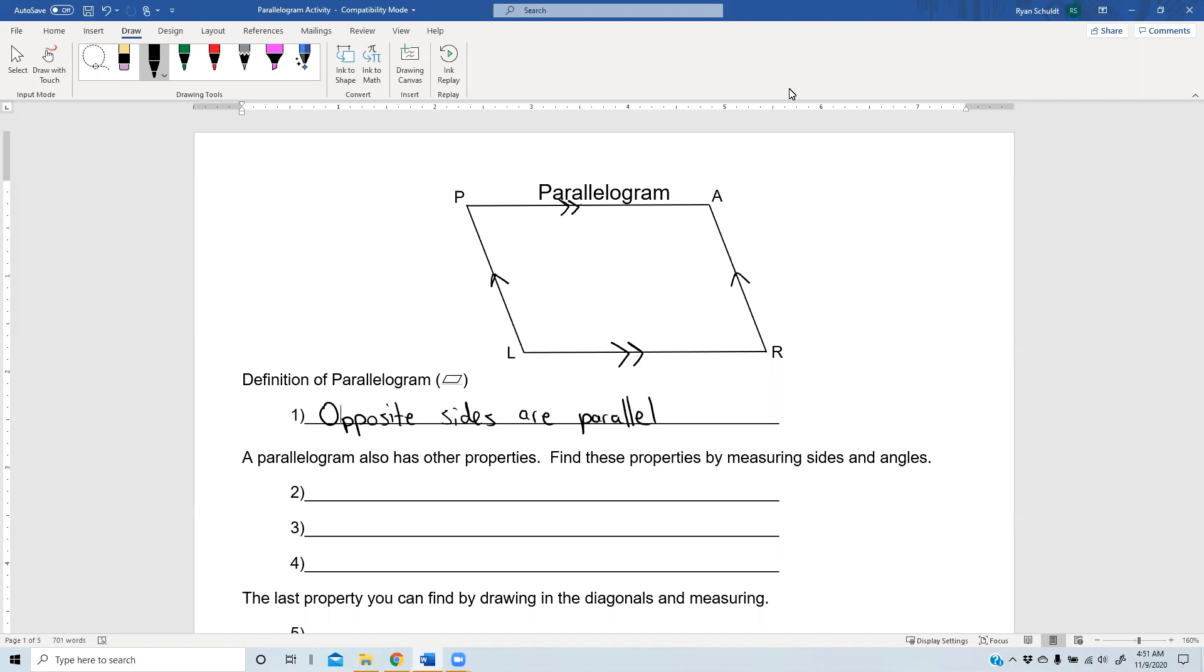But as with anything, there's other properties. And we can find these properties by measuring the sides and the angles. Again, if you were in person, we'd be doing this with a ruler and with a protractor and just having at it. But we're not. I'm doing this to be a video.